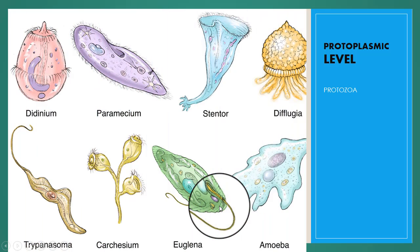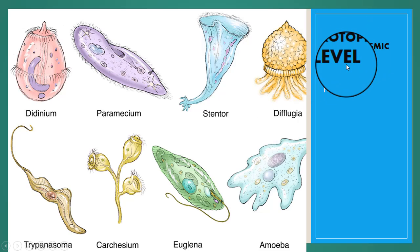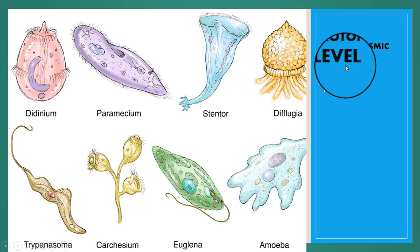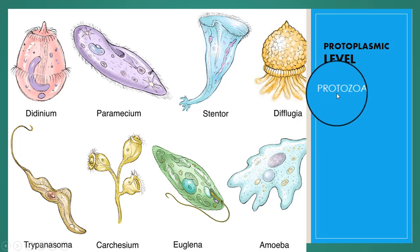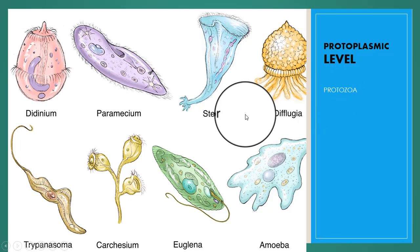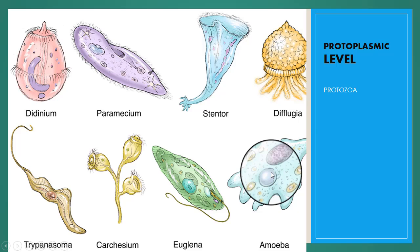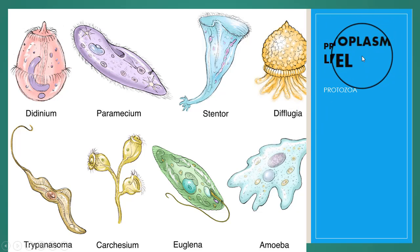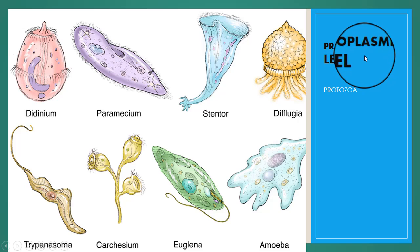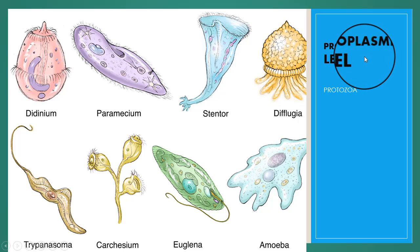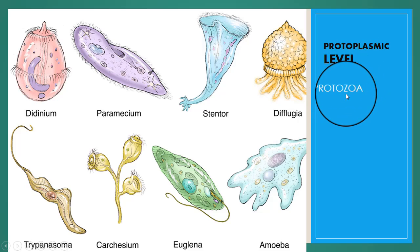The first level of organization is the protoplasmic level, also called acellular level. It occurs in protozoa and other unicellular organisms. All life activities are confined within the boundaries of a single cell. Within the cell, the protoplasm is differentiated into specialized cytoplasmic structures or organelles which carry out functions such as nutrition, osmoregulation, and locomotion.